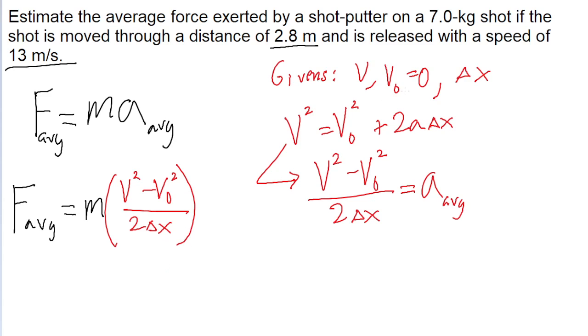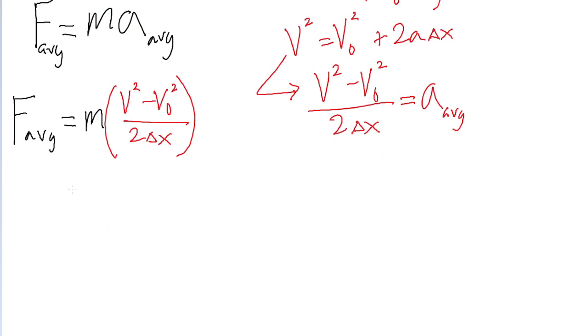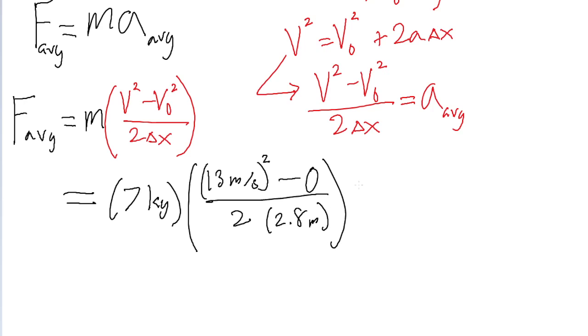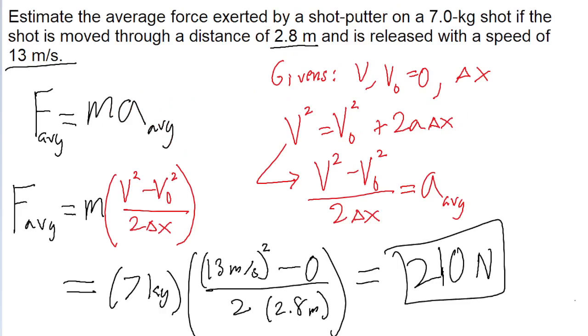So now what we got to do is plug in the values that were given to us into the calculator. The mass of the shot is seven kilograms. Its final speed is 13 meters per second. This is squared minus the initial speed of nothing, all divided by two times the distance it moves through, which is 2.8 meters. Put all this into a calculator, and we get a force of about 210 newtons. So this is the average force exerted by the shot putter on the shot.